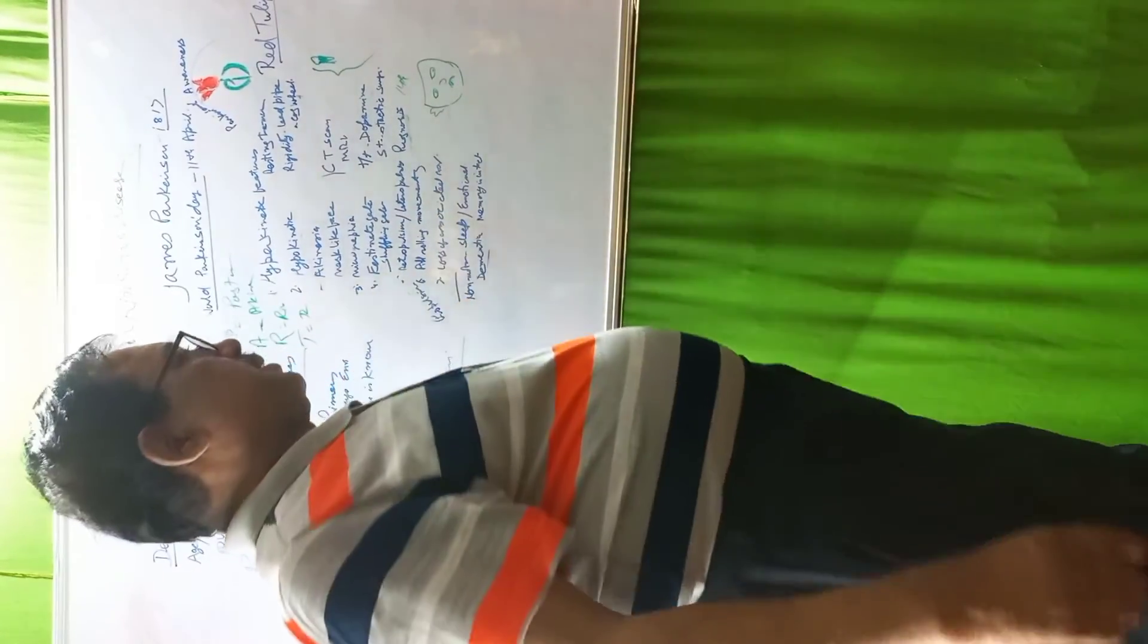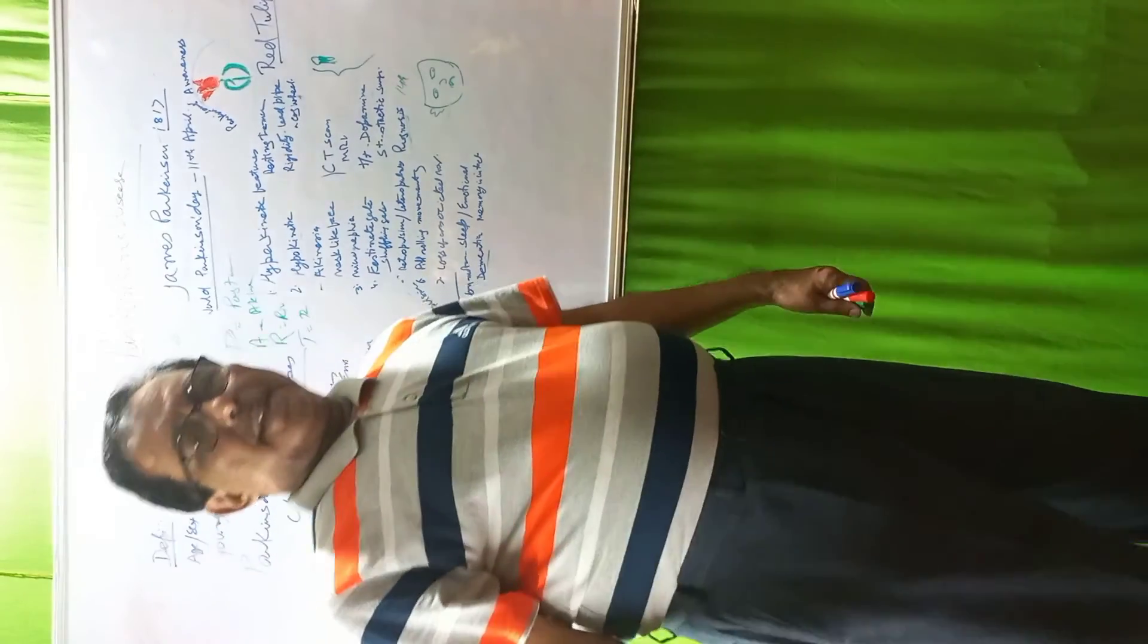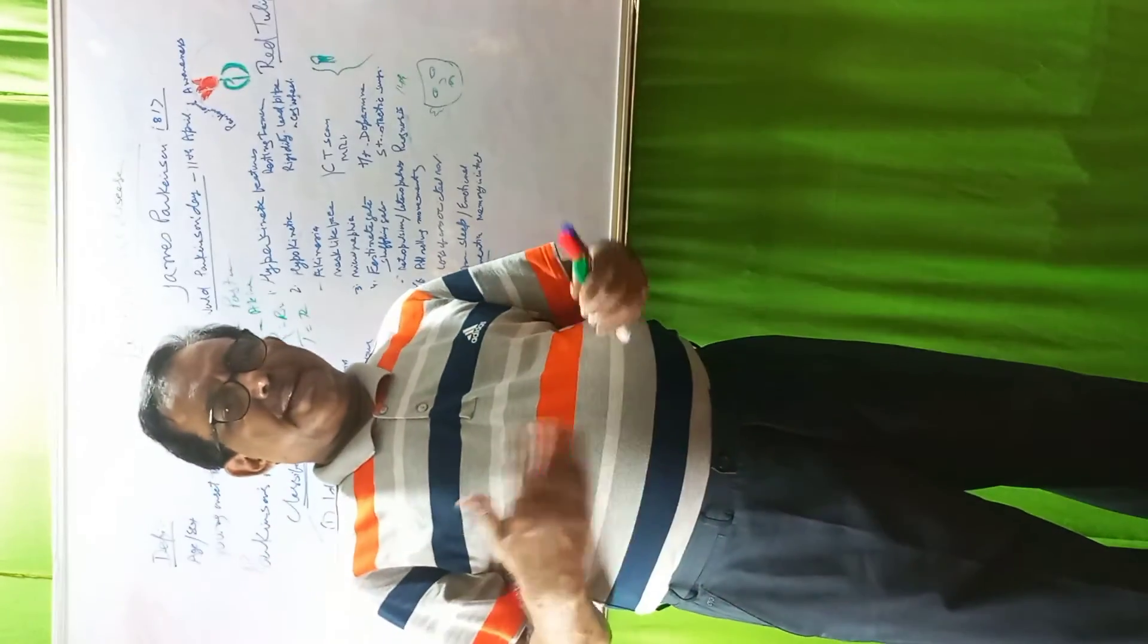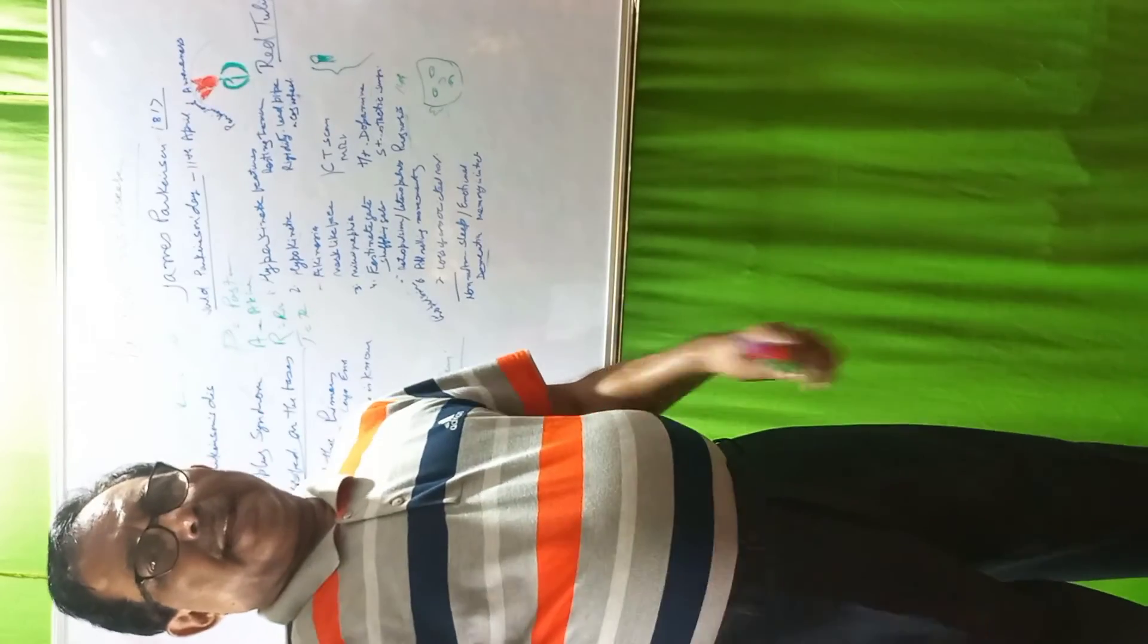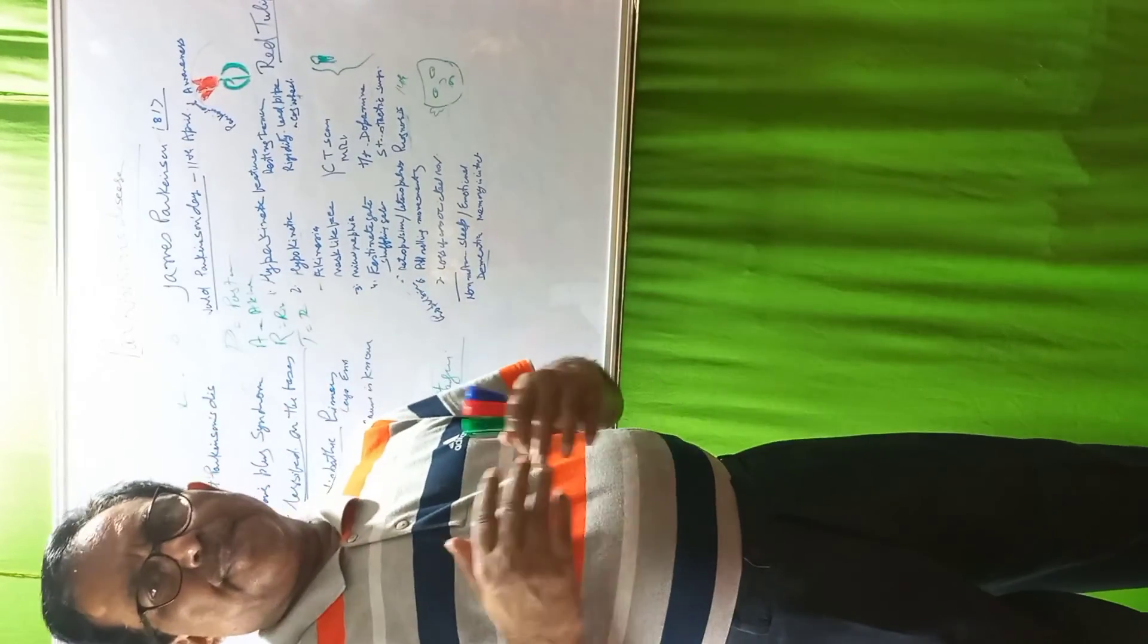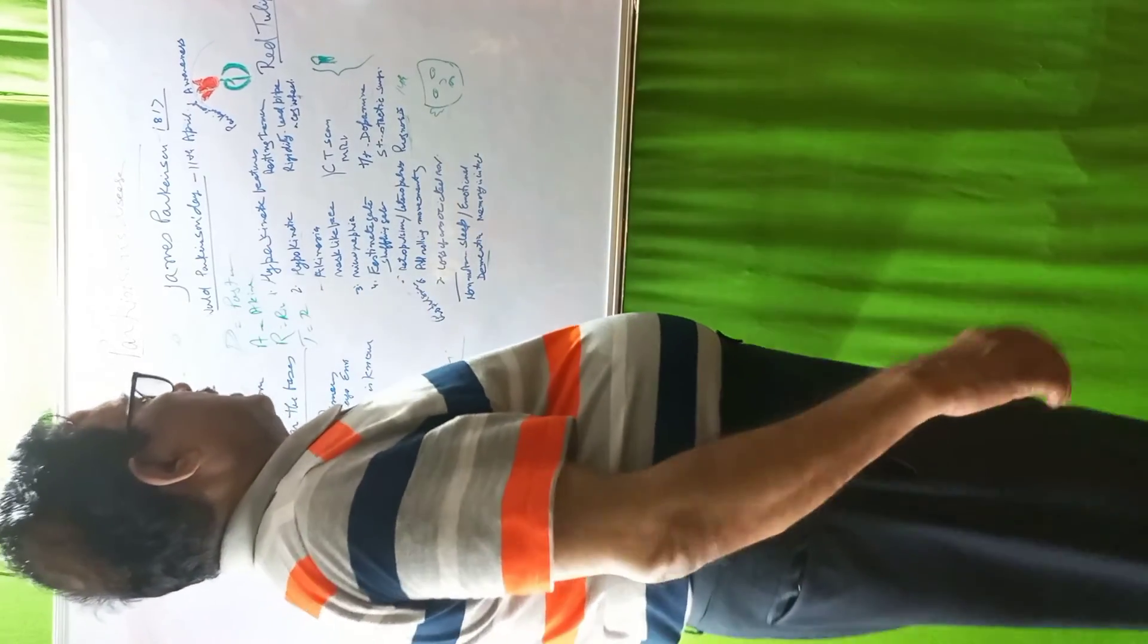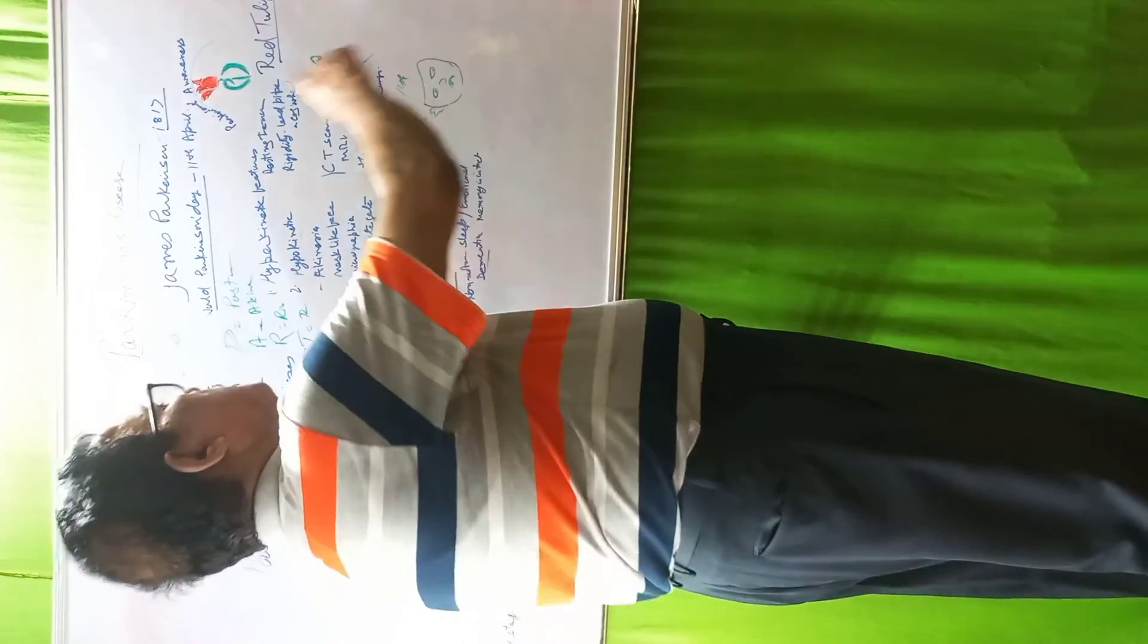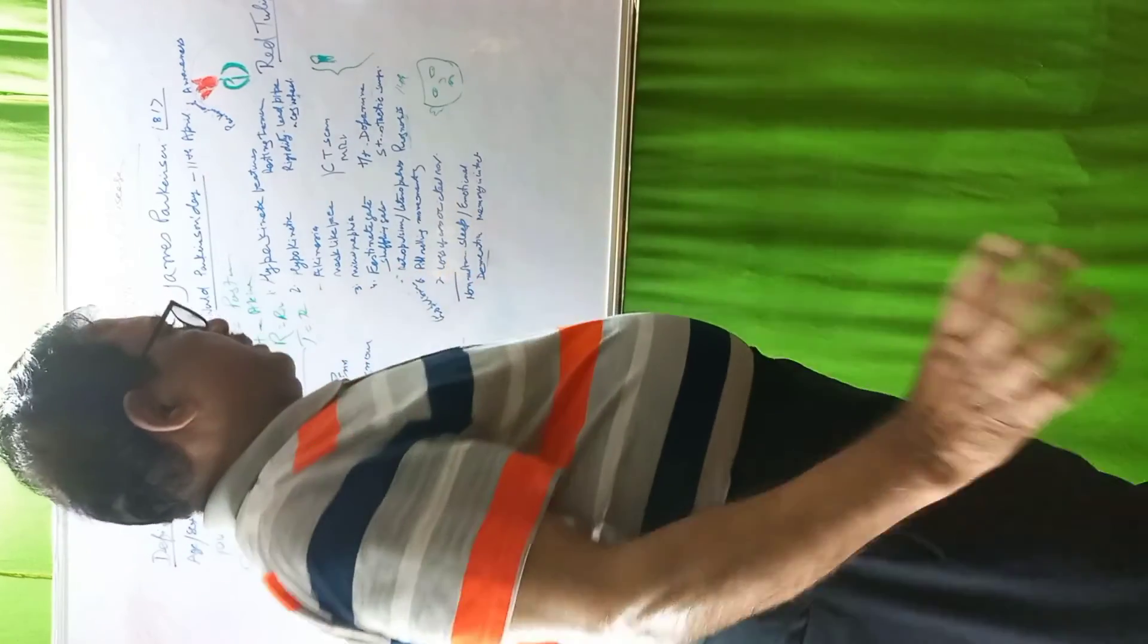Prognosis: Parkinson's disease is not fatal, but its complications are fatal. Life expectancy once diagnosed is reduced. The red tulip is the symbol of Parkinson's disease.